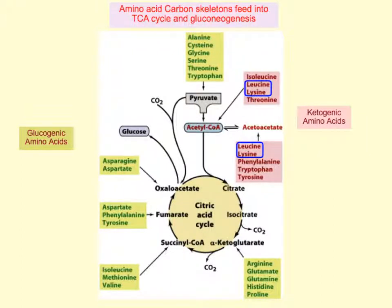Aminotransferases allow amino acids to be added into the citric acid cycle, or as pyruvate or acetyl-CoA. What happens is the amino acid will have the amine group either move to aspartate or to glutamate, and then the carbon skeleton can move into the citric acid cycle.